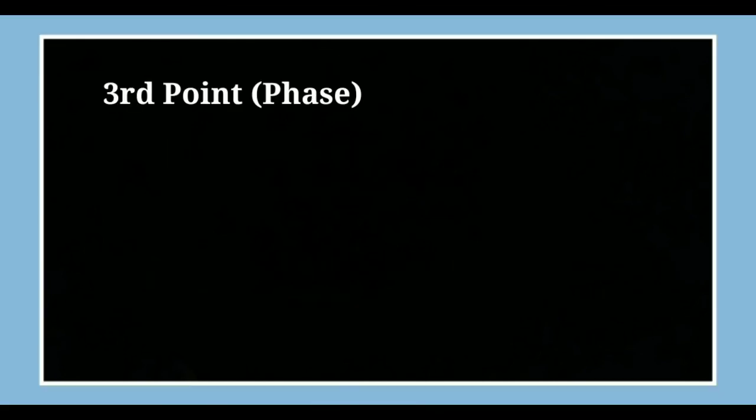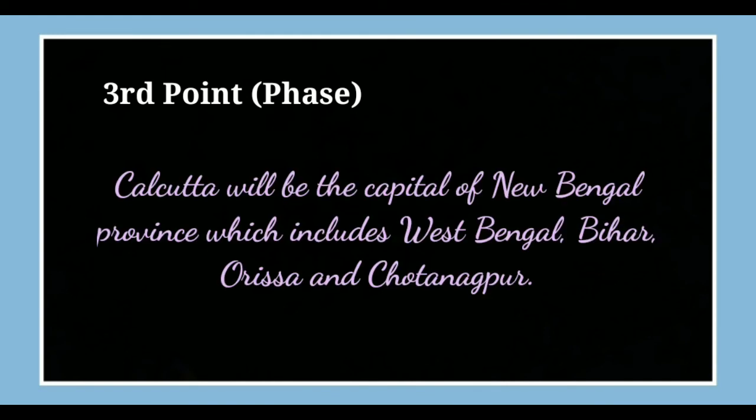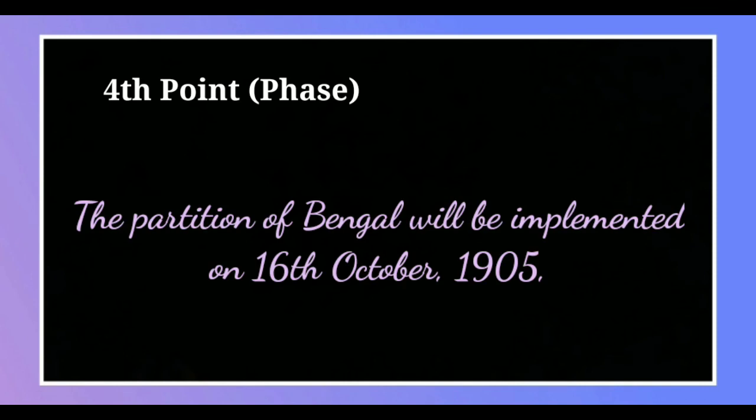Third point: Kolkata will be the capital of the new Bengal province, which includes West Bengal, Bihar, Orissa, and Chotanagpur. Fourth point: The Partition of Bengal will be implemented on 16th October 1905.